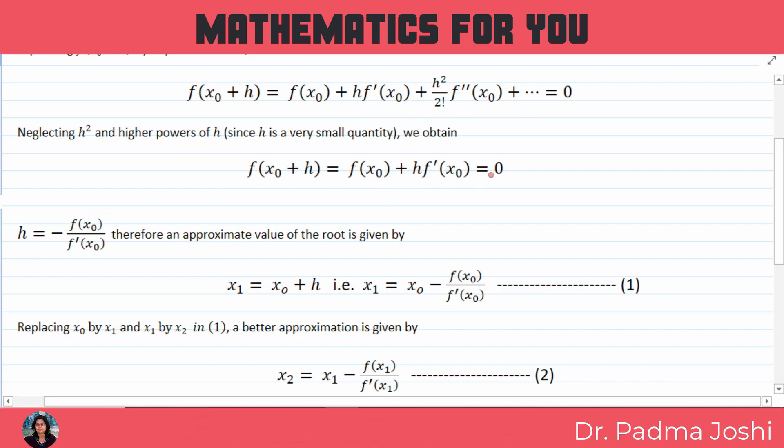This is solved, simplified because it is equal to 0. We have h value: h equals minus f(x0) upon f dash x0. Therefore, an approximate value of the root is given by.